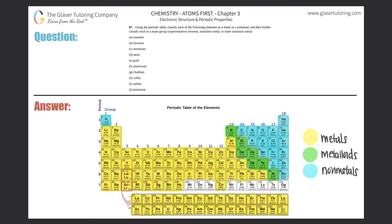Number 87: using the periodic table, classify each of the following elements as a metal or non-metal, and then further classify each as a main group or representative element, a transition metal, or an inner transition metal. We have elements a through j, so we're basically going to be finding where these elements are and labeling them.